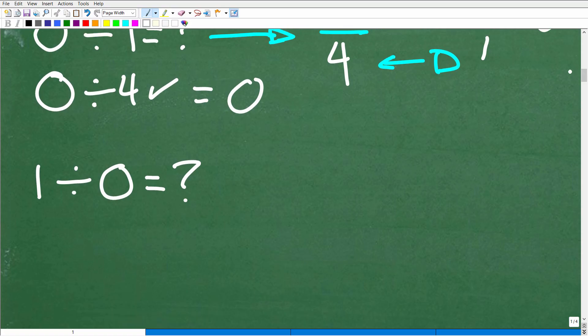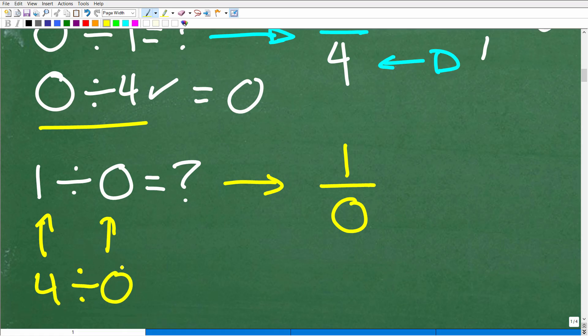So one divided by zero, one divided by zero. We can think of this as the fraction as one divided by zero. Now, this is an entirely different situation. Okay, now I'm going to go back, and I'm actually going to change this to this type of problem. I'm going to use the number four, four divided by zero, just to see if we can kind of see this a little bit more clearly.